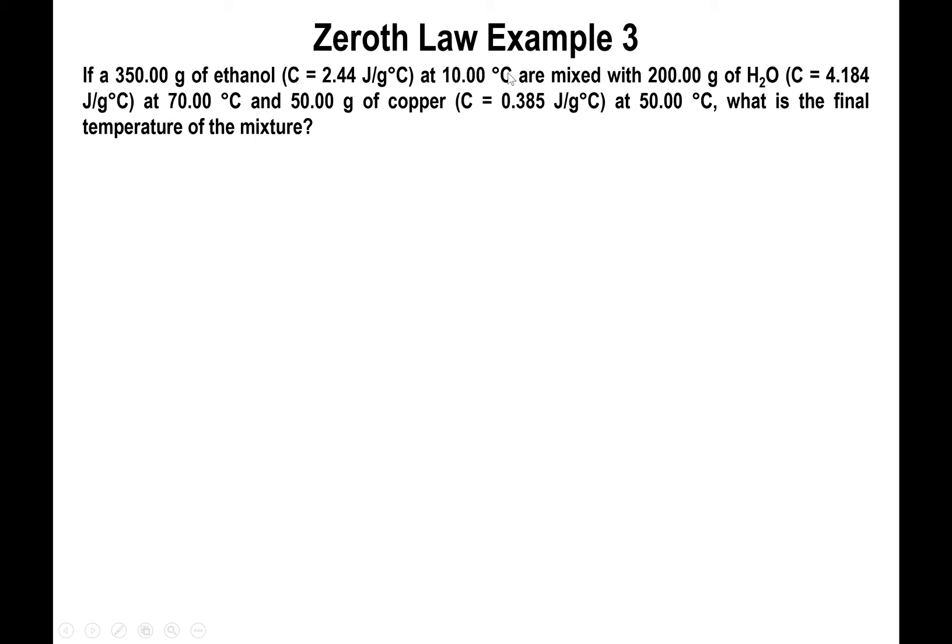We're mixing this with 200 grams of water which has a heat capacity of 4.184 joules per gram degrees Celsius at 70 degrees—that's the initial temperature of water. And we are adding 50 grams of copper with a heat capacity of 0.385 joules per gram degrees Celsius at an initial temperature of 50 degrees Celsius.